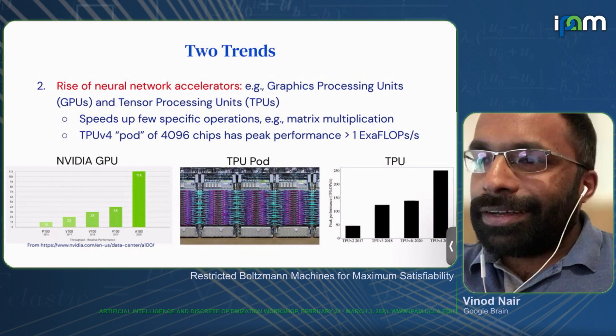Just to give you a sense, the V4 TPUs — if you use an entire pod of such chips, which contains 4096 chips — that has a peak performance of more than one exa-flop. Obviously you don't hit peak performance, but the raw compute power provided by these accelerators is absolutely amazing.